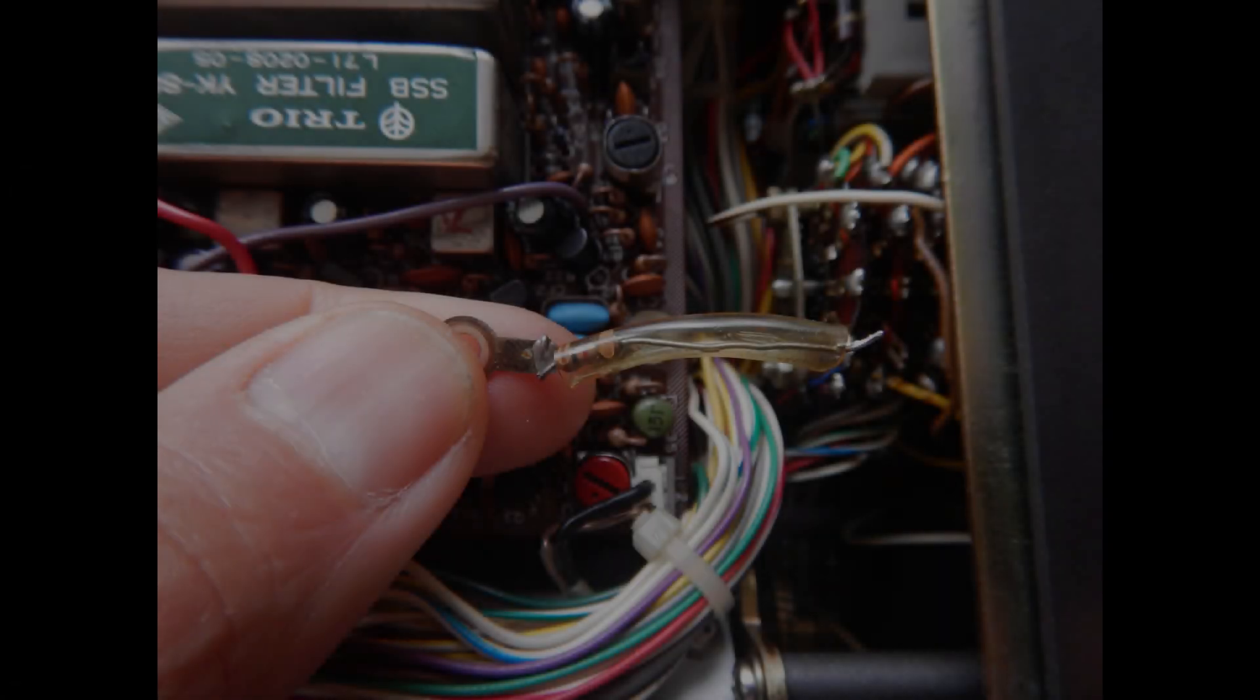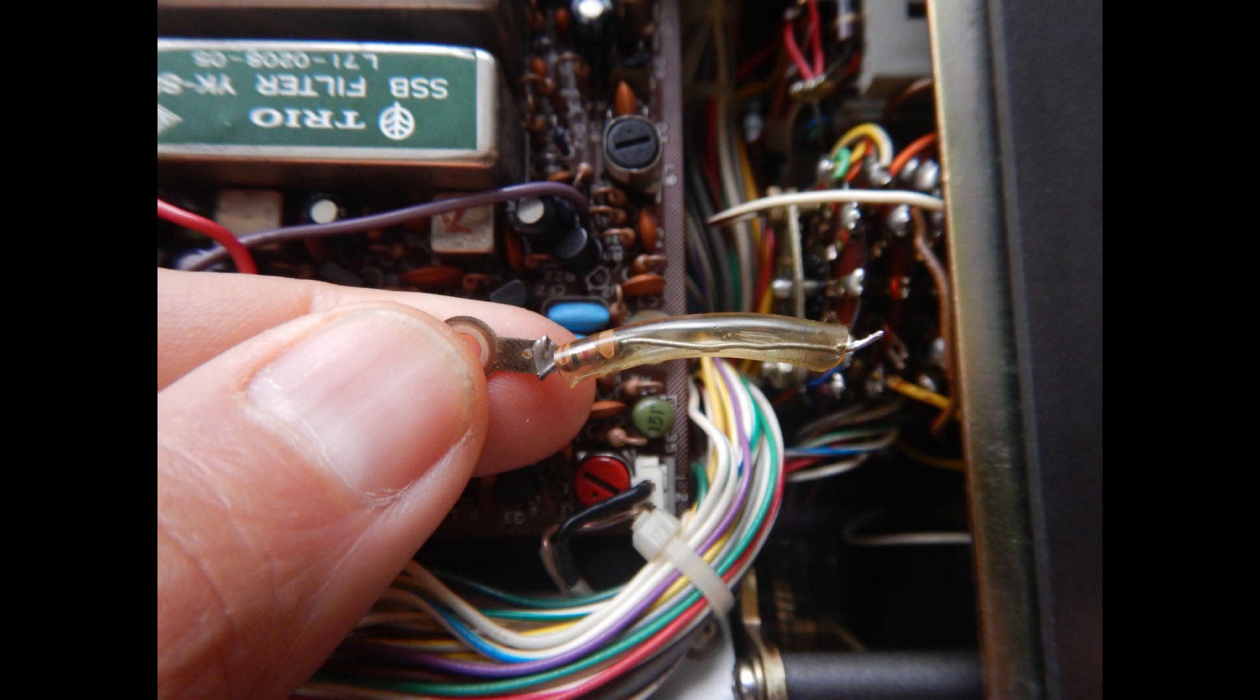When I was putting all the bands together, I found this resistor disconnected. One side of it clearly goes to a ground screw. But now I need to look on the schematic for the right place to solder the other side.